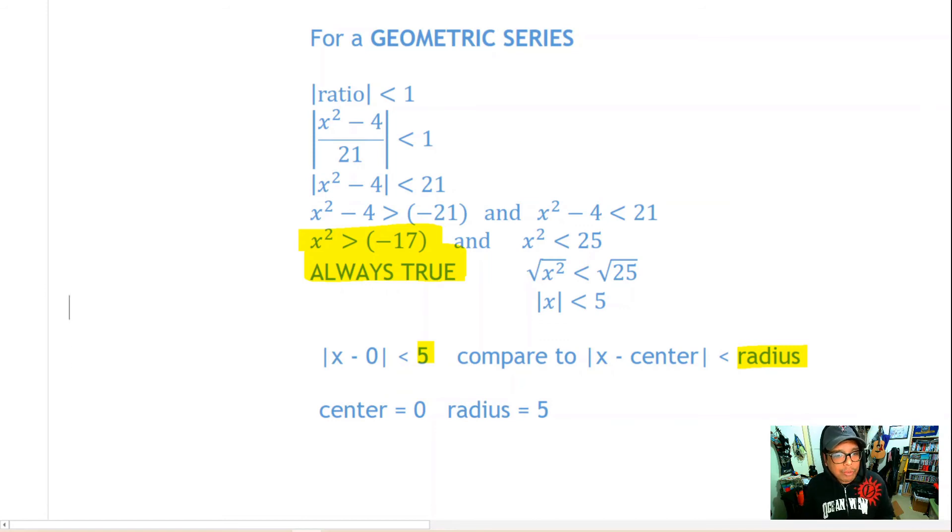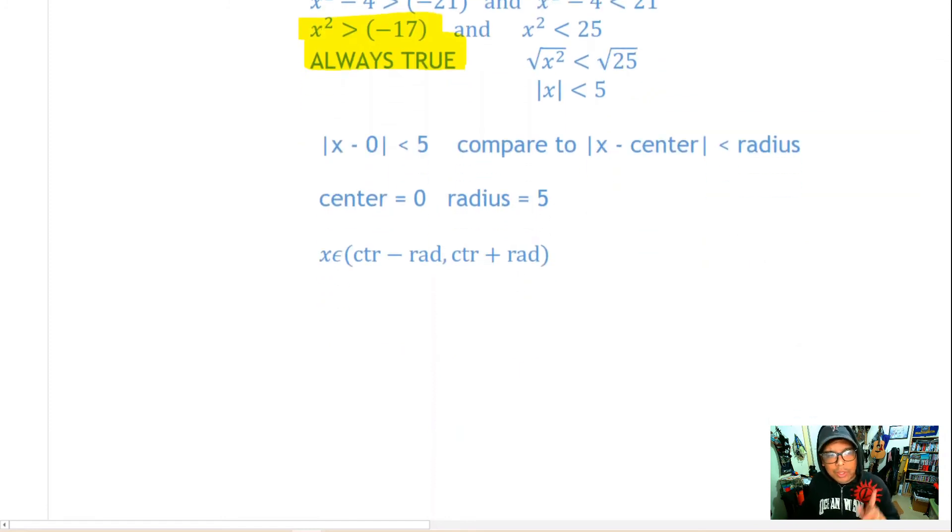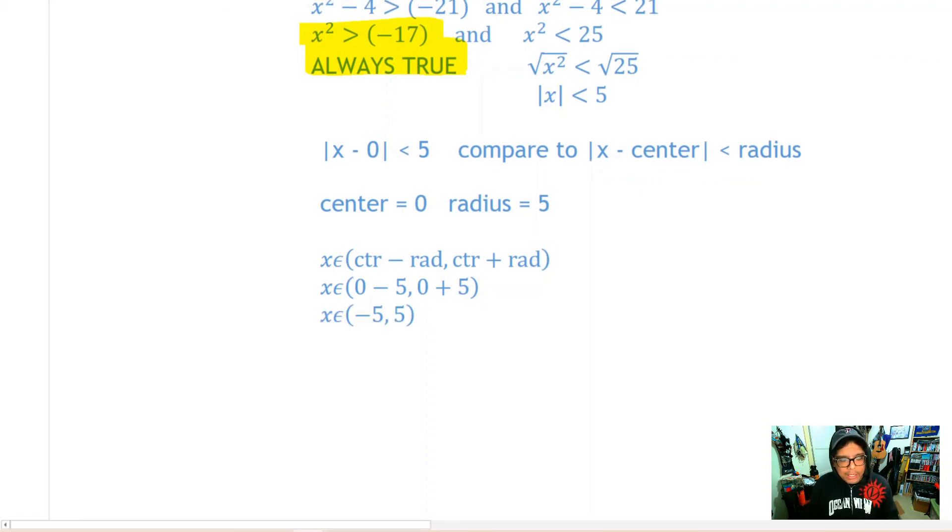With knowledge of the center and the radius we can use the interval for any power series which is x must be between the center minus the radius and the center plus the radius. Which in our case is x must be between 0 - 5 and 0 + 5, or x has to be between -5 and 5.